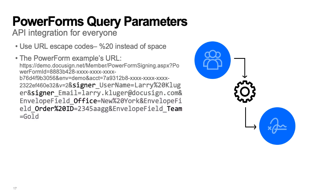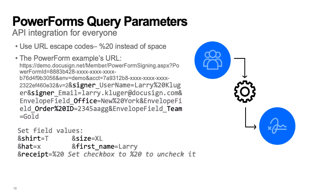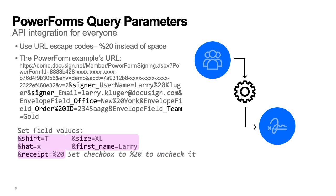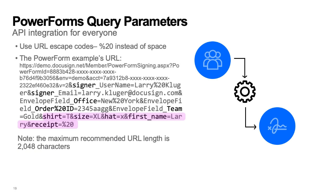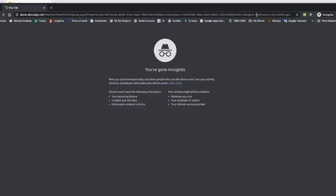Lastly, we're also setting the data field values. For the checkbox fields, we use the value X to check the checkbox. And we use a space character encoded as percent-20 to uncheck the checkbox tab that is checked by default in the template. Here's the complete URL. Now let's add all of these query parameters to the Power Form URL and open the page as the signer.